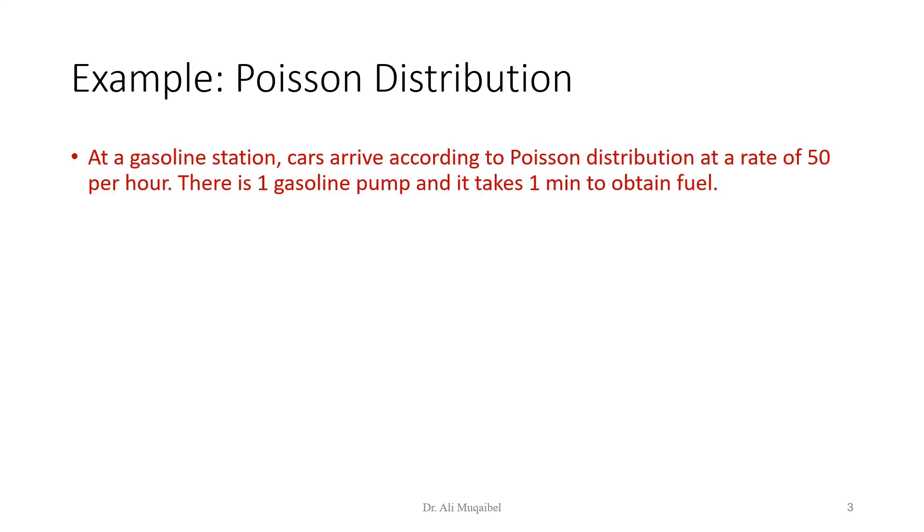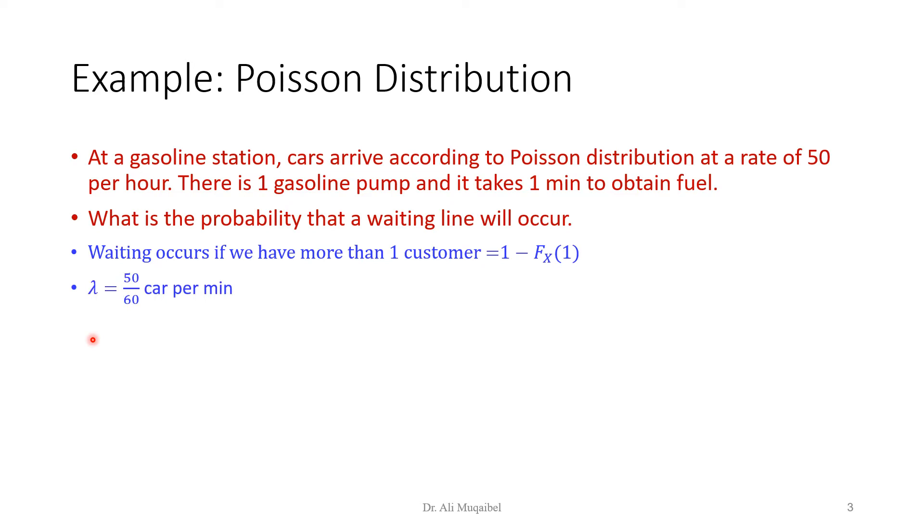An example of Poisson distribution. At a gasoline station, cars arrive according to Poisson distribution at a rate of 50 per hour. This is lambda. There is one gasoline pump and it takes one minute to obtain fuel. What is the probability that a waiting line will occur? Waiting line occurs if we have more than one customer. So it's 1 minus the probability of having 0 or 1, the CDF of 1. We have lambda given in the question to be 50 per hour. If you want to make it into minutes, it becomes 50 divided by 60 per minute. Capital T is 1 minute, the average processing time is 1 minute per car.